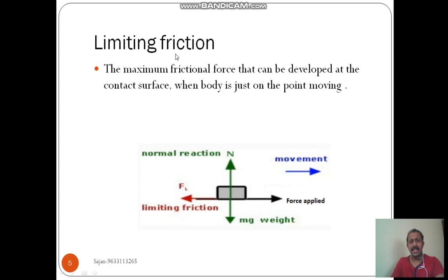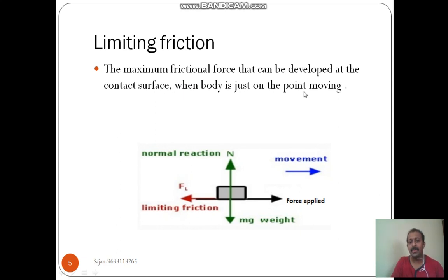Next is limiting friction. Limiting friction is the maximum frictional force that can be developed at the contact surface when the body is just on the point of moving — the impending condition, or just starts to move condition. At that time, the maximum frictional force will occur at the contact surface. That frictional force is called limiting friction.